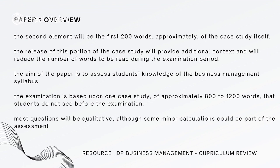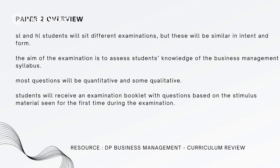The second element will be the first approximately 200 words of the case study itself. Releasing this portion will provide additional context and reduce the number of words to be read during the examination. The aim of Paper One is to assess students' knowledge of the Business Management syllabus. The examination is based upon one case study of approximately 800 to 1,200 words that students do not see before the examination. Most questions will be qualitative, although some minor calculations could be part of the assessment.